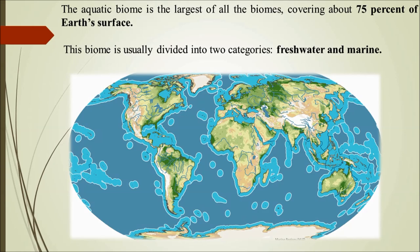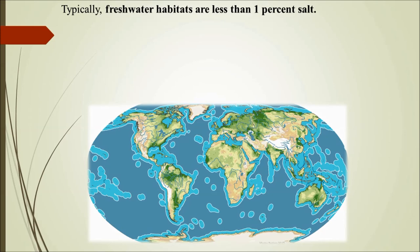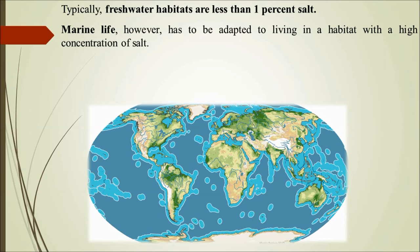Freshwater habitats have less than 1% salt content. The key difference between freshwater and marine is the salt content. Marine life has to be adapted to living in a habitat with a high concentration of salt, whereas in freshwater habitats, salt concentration is very low.